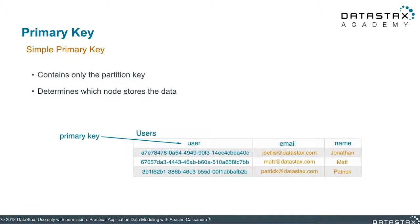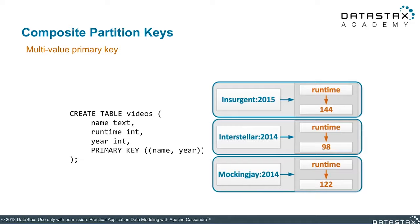Let's look at the ways you can construct a primary key using a partition key. The first is simple — just one key. In this diagram, the primary key is a UUID. UUID is a great choice for a primary key because it is guaranteed to be unique. A simple primary key means you have just one value — no clustering columns. In the video table example, ID is the only thing in the primary key.